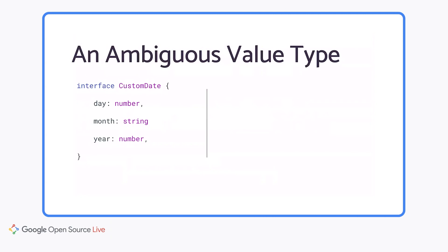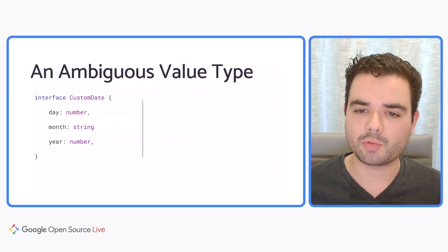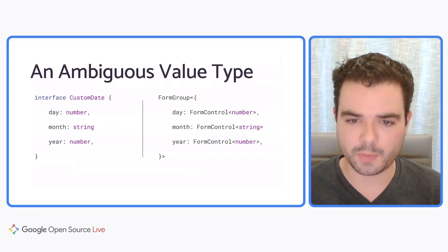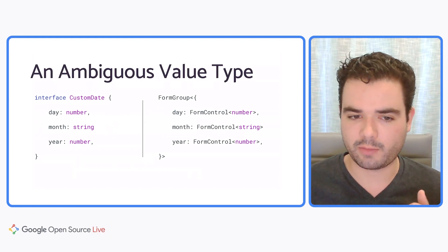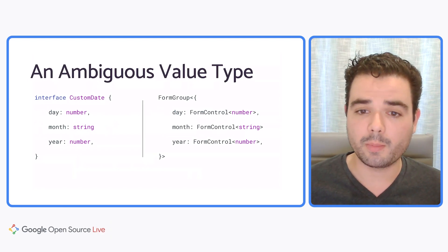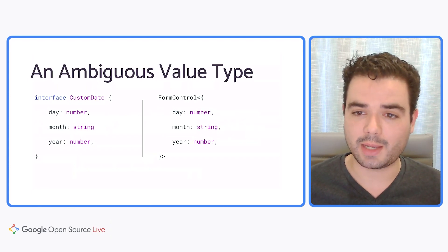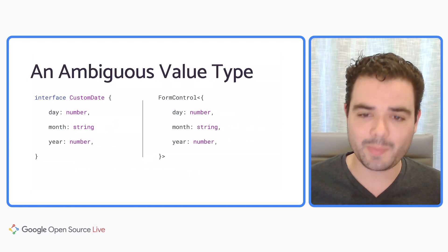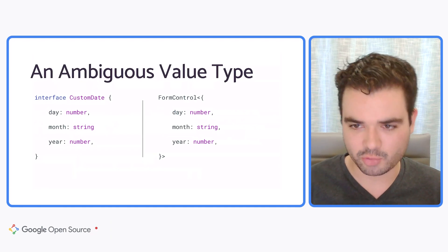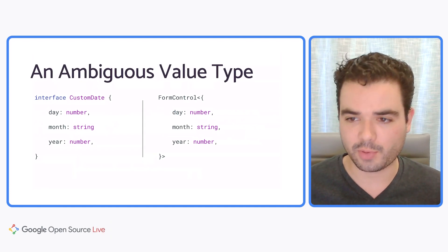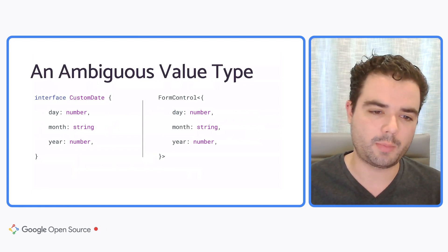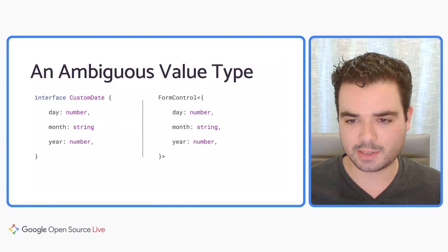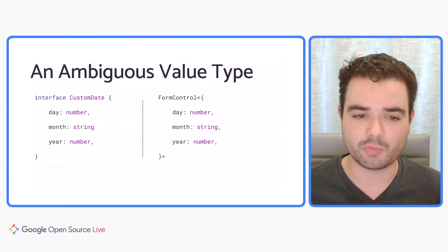A value type by itself is not always enough to fully infer the forms model. This example value type describes a date with keys for day, month, and year. On the right we have one possible control type: a form with three individual controls. But there's another interpretation — a date picker widget, which is commonly implemented as a single custom control returning an object with three fields. The value type alone is not enough to infer the control type, which illustrates one of the key reasons typed forms uses control types rather than value types.